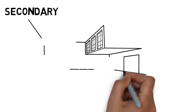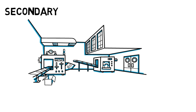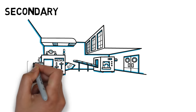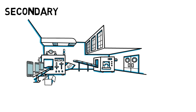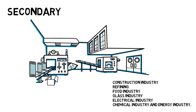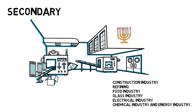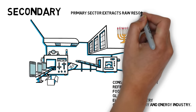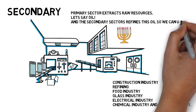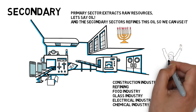The next sector is Secondary. This is where businesses take the raw materials produced by the Primary sector and process them into manufactured goods and products. This sector is sometimes known as the Production sector. Examples of the Secondary sector are the Construction industry, Refining, Food industry, Glass industry, Electrical industry, Chemical industry, and Energy industry. So the Primary sector extracts something from the Earth and the Secondary sector turns that into something we can use.